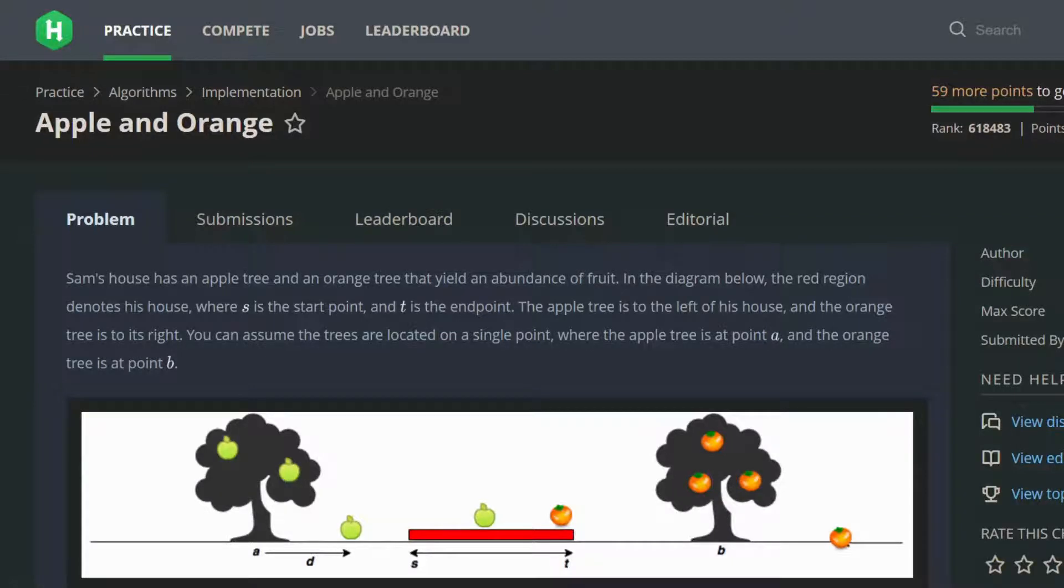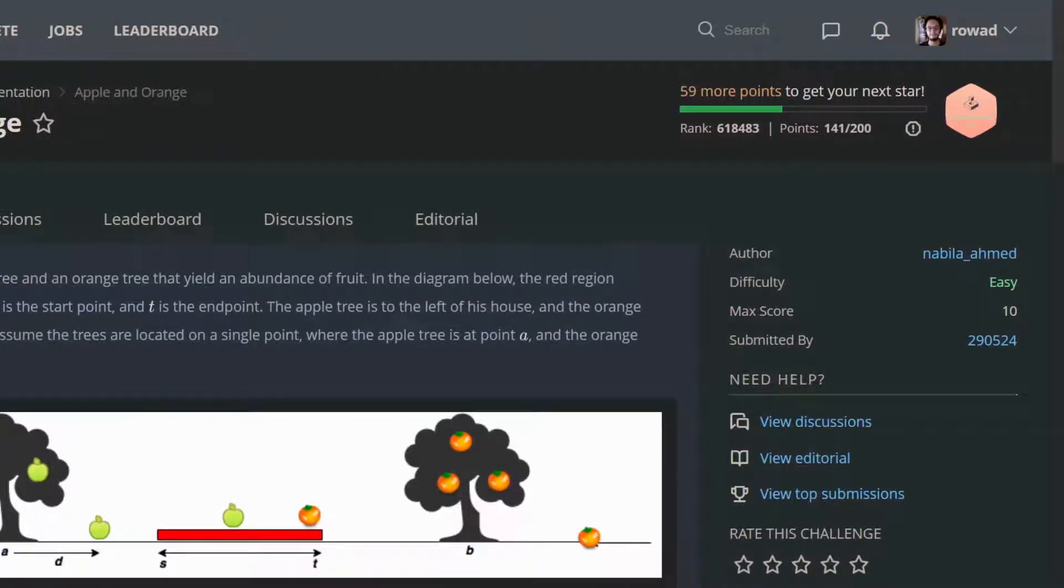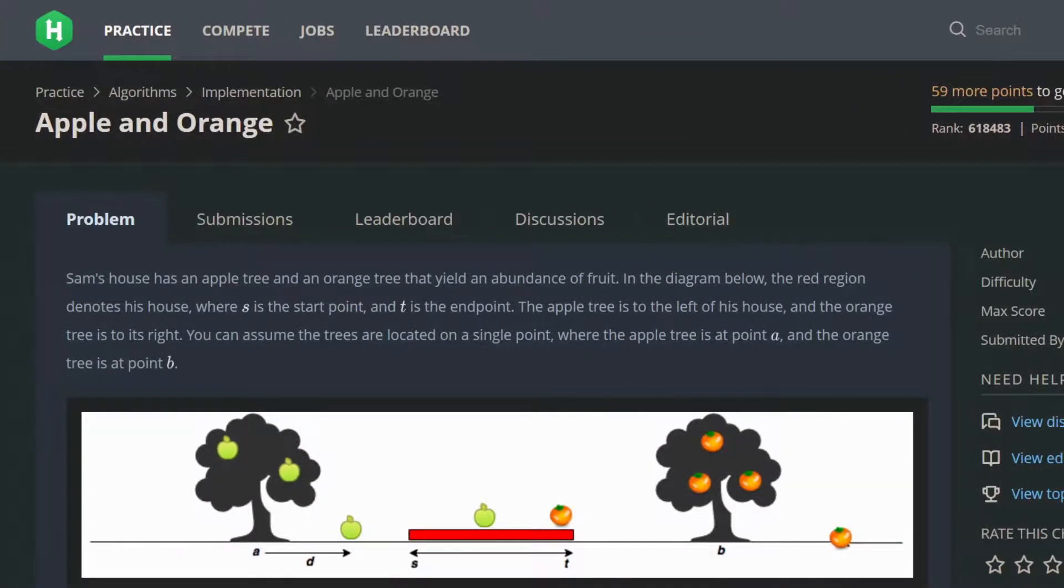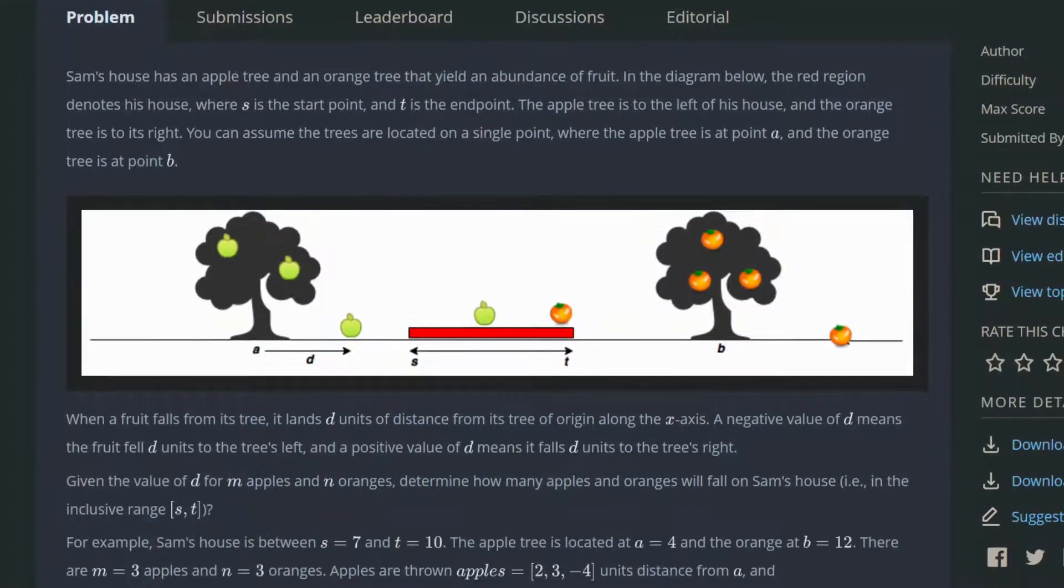This is a problem called apple and orange. It's an easy problem as you can see here. Basically there is a house and there's two trees, and this is an X axis and the house dimensions or where it starts and ends.